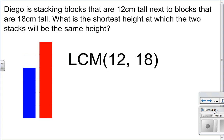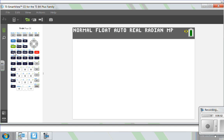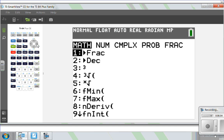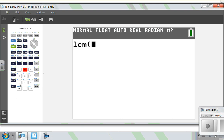Well, let's use that fantastic graphing calculator trick that we now know. We'll go in here, and we're going to do the LCM math over to number, option number eight of 12, 18. And that is 36.